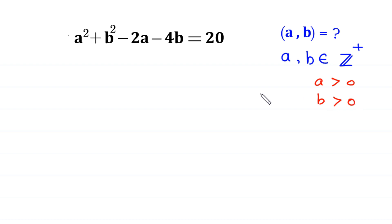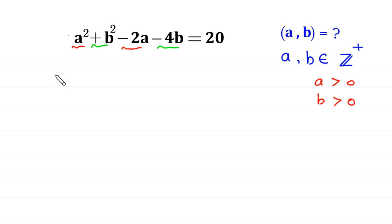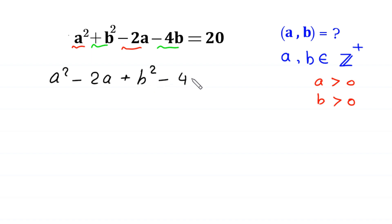First of all, we rearrange these terms. We write a squared with negative 2a, and b squared with negative 4b, like this: a squared minus 2 times a, plus b squared minus 4 times b, is equal to 20.